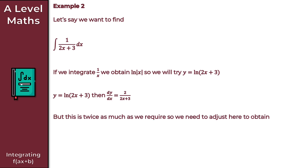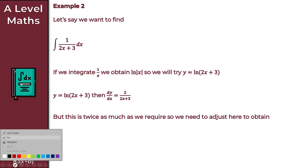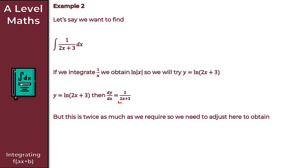Notice that dy/dx is twice as much as we require. We just want 1/(2x + 3), but dy/dx gives us 2/(2x + 3). So we compare dy/dx to the integrand and adjust to get the correct result. Therefore, the integral of 1/(2x + 3) with respect to x is equal to ½ln(2x + 3) + c, where plus c is our constant of integration. That gives us the solution to Example 2.